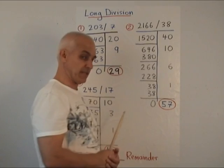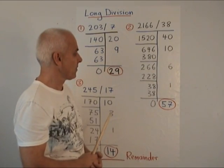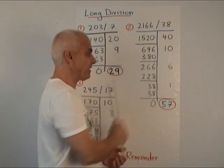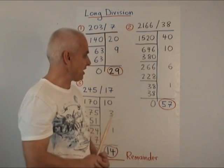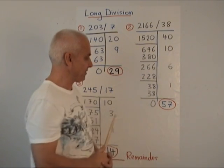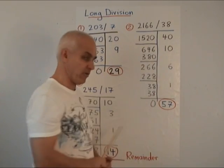How many 38s fit into 266? We might guess 6. 6 times 38 is 228. You have to do that multiplication on the side. When we subtract, we get 38. How many 38s? There's one more 38 that will fit into that and then we'll have 0.